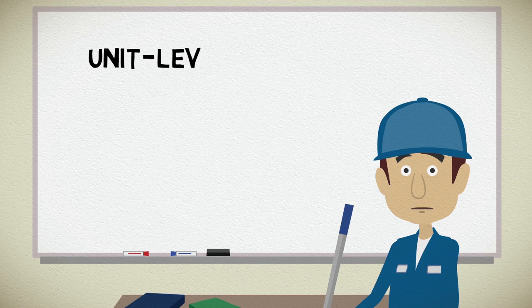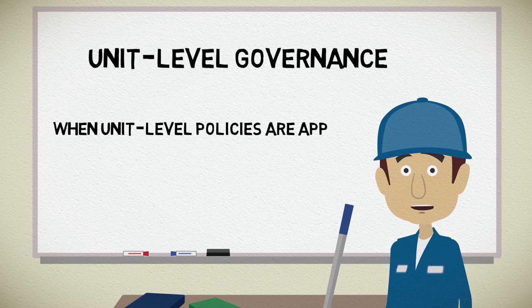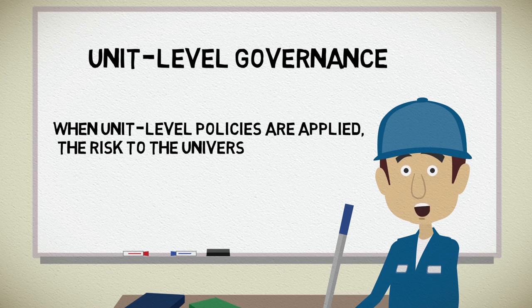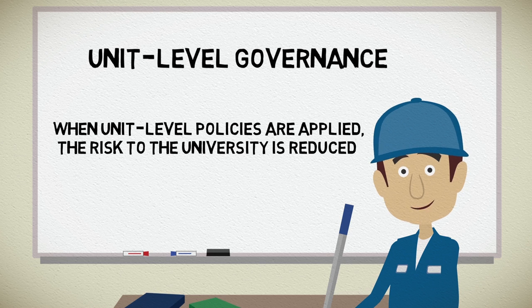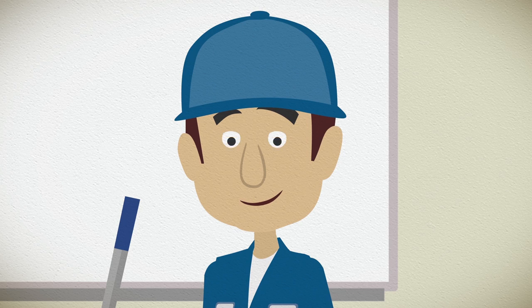Today, we are talking about unit-level governance. When unit-level policies are applied, risk for the unit and the university is reduced. Let me show you how you can reduce risk for your unit and for the university.